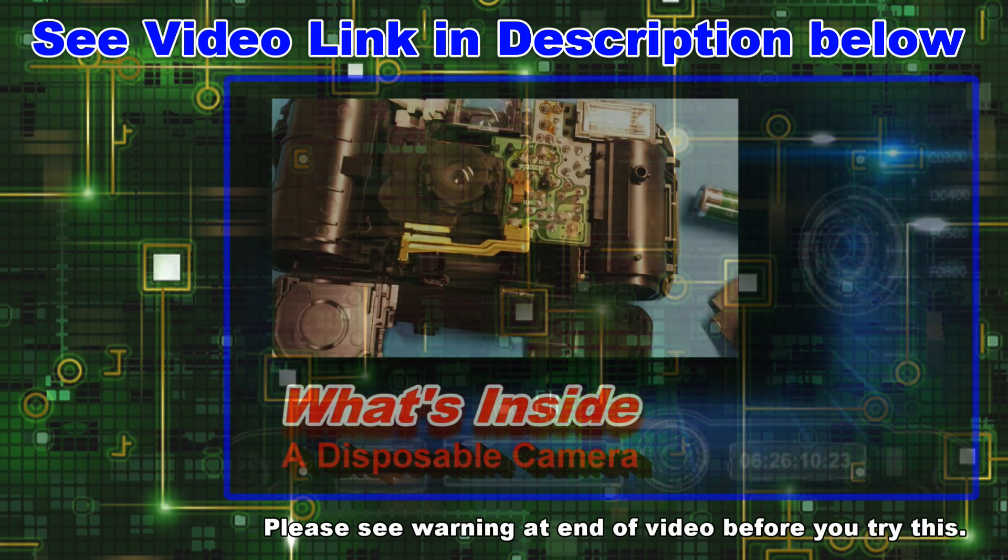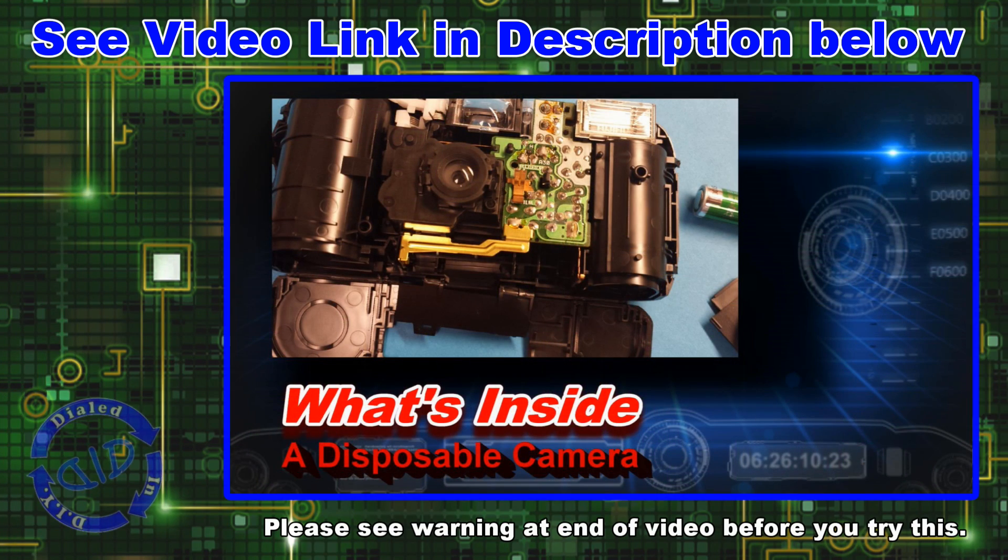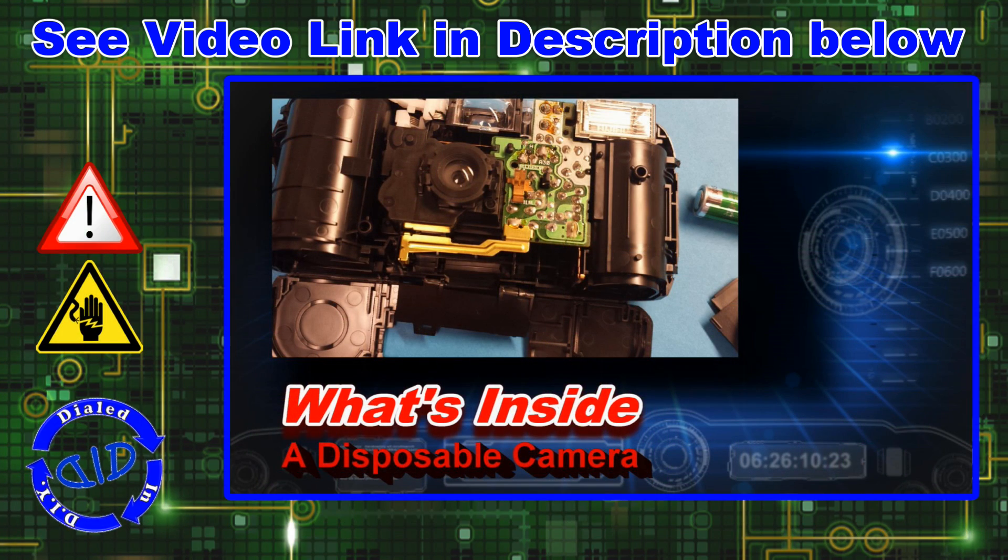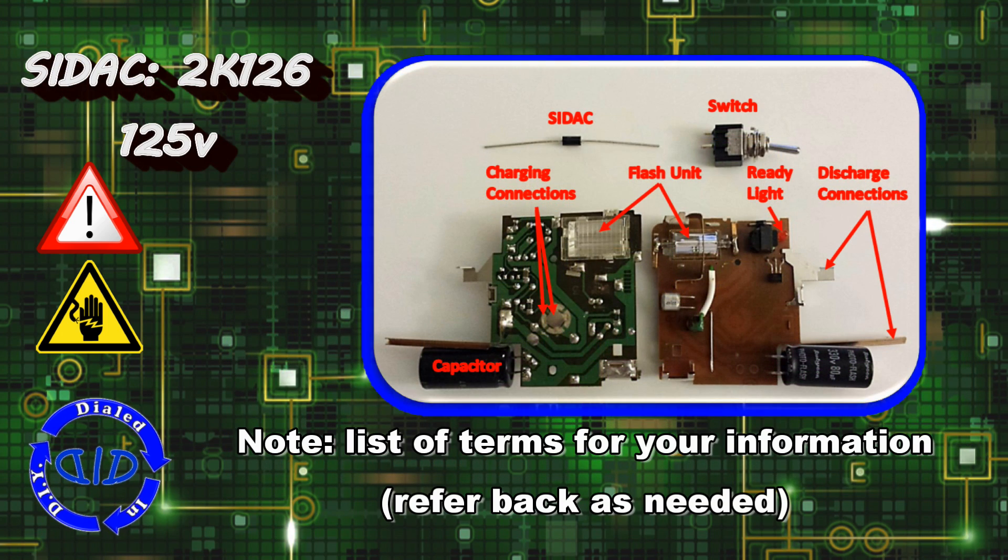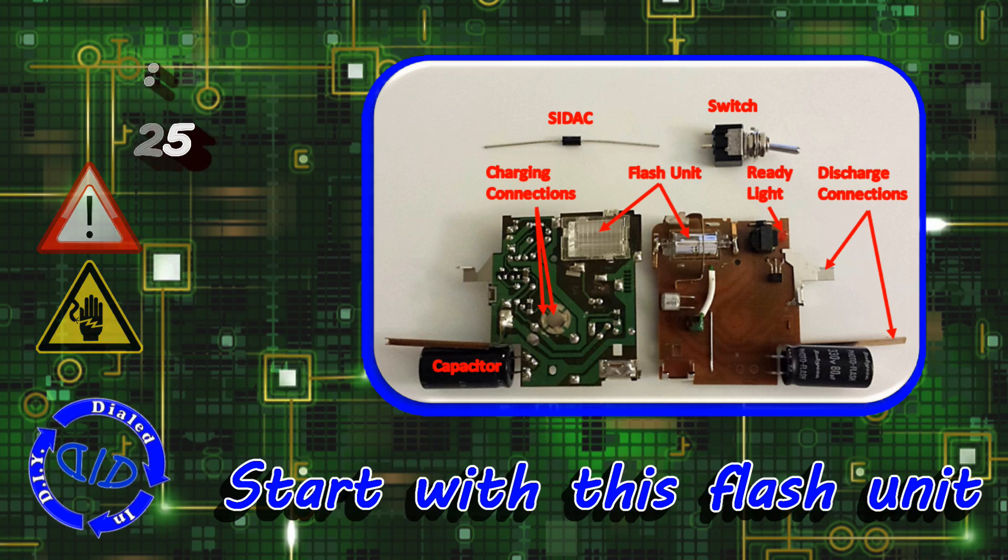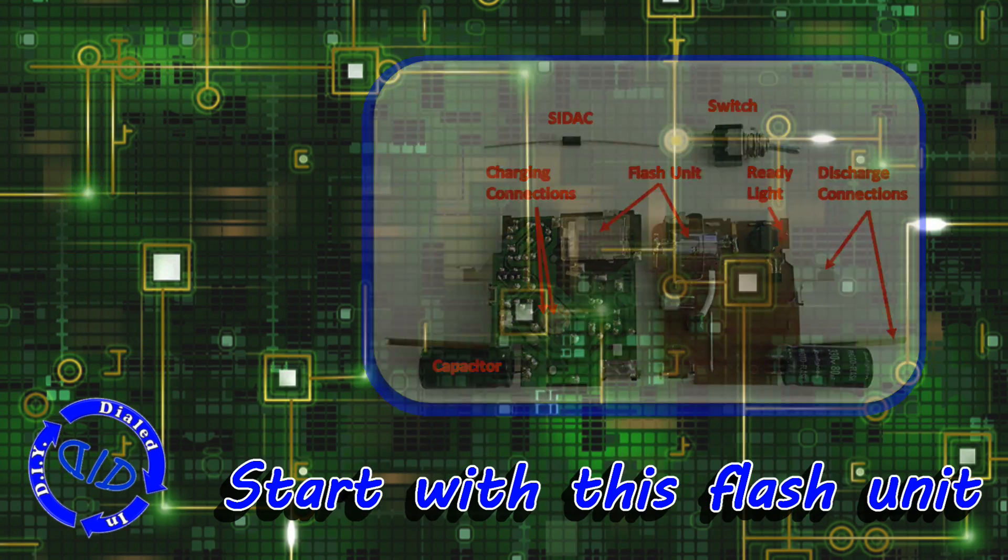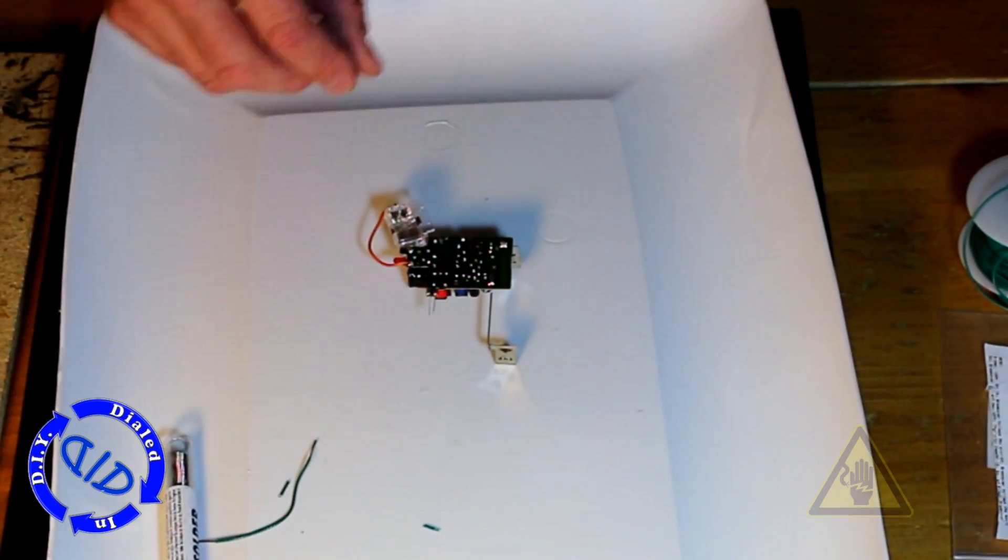In a previous video, we looked at what's inside a disposable camera. I also explained how you can get these for free, including the battery that you need to run it with. This graphic shows you everything you need to know, but you do need to get that extra piece, the Sideac. I got mine online at Amazon, and you're going to start with the main flash unit. Look in the description below for more details about this extra device that you'll need.